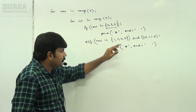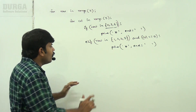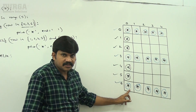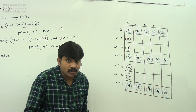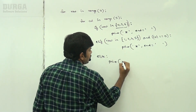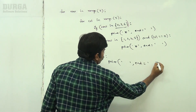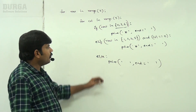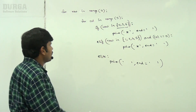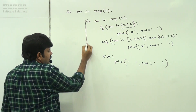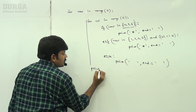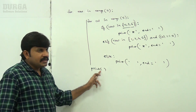For rows 0, 3, 6 done, rows 1, 2, 4, 5 with column zero done. Now all star symbols are completed. In the remaining places we take spaces only: else print space with end equal to empty. For every row, to start the next line, add a print statement.